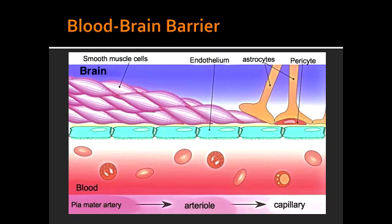What are some areas of the brain that have fenestrated capillaries and no blood-brain barrier, allowing molecules in the blood to affect brain function? These areas include the area postrema, which causes vomiting after chemotherapy, and the OVLT — organum vasculosum of the lamina terminalis — which is responsible for osmotic sensing.